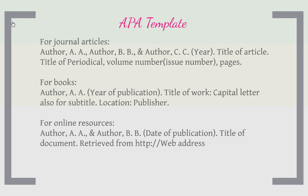Books are set up much the same way. They have authors, and if there's more than one author it's going to look just like the journal articles format. Then year of publication in parentheses. Then the title of the work, and if there is a subtitle, put a colon with the subtitle — make sure you capitalize the first letter of the first word of a subtitle too. Then a period, followed by the location it was published with a colon and the publisher.